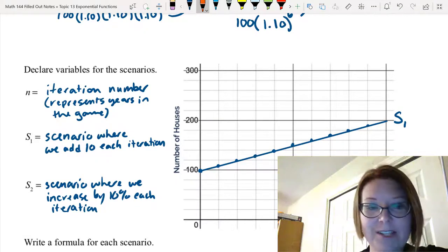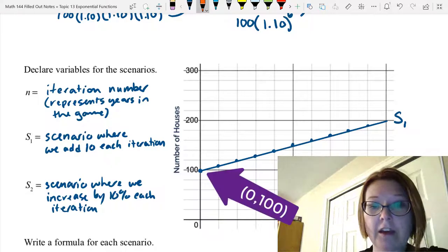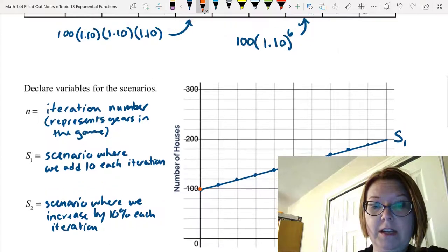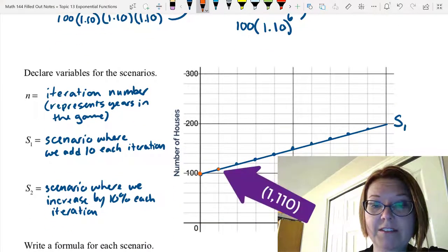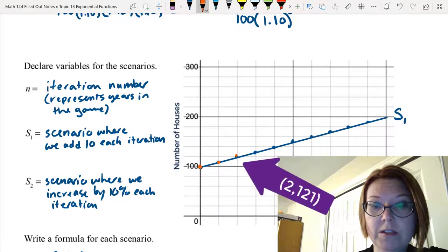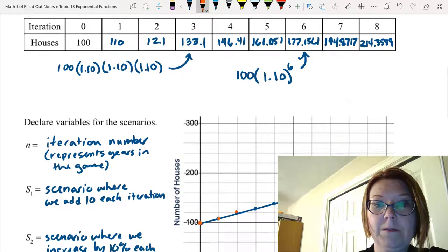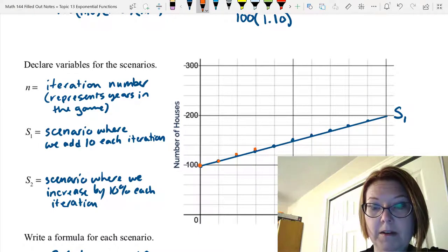I'm going to use a different color for scenario 2, kind of an orangey color. I still start at 100. At 1, I have 110, so that's exactly the same. At 2, I have 121, just a little bit bigger. At 3, 133, again a little bit bigger.